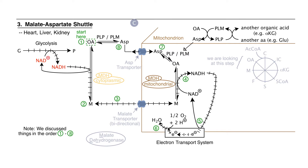Panel C shows a third strategy for maintaining redox neutrality in the cytoplasm — the malate-aspartate shuttle — which is operative in heart, liver, and kidney. To the left, we see the production of NADH as before. At step 1, assume there's a molecule of oxaloacetate present as part of the cytoplasmic pool of organic acids. Oxaloacetate, or OA, is a ketone, and the cytoplasmic form of malate dehydrogenase — working in the reverse direction from the TCA cycle — is able to reduce oxaloacetate to malate, converting a ketone to an alcohol.